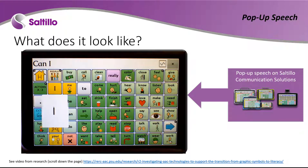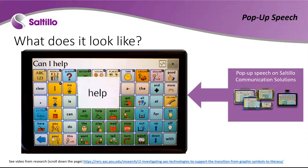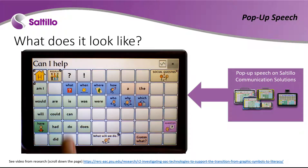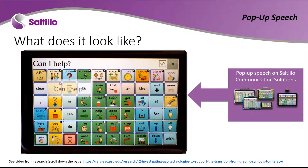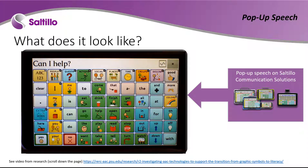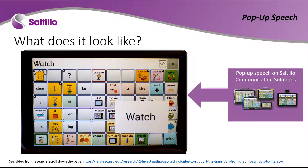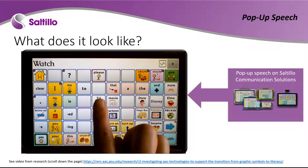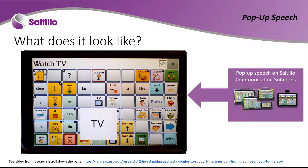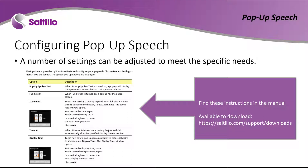Currently, the research focuses on static displays with no navigation, showing a huge potential for learning sight words using the transition to literacy or pop-up speech feature. Check out the articles and videos at RERC on AAC, where you will see dynamic text used with sight words in a grid. There are additional articles at the end of this video. You can find more information about the settings for pop-up speech in the manual.